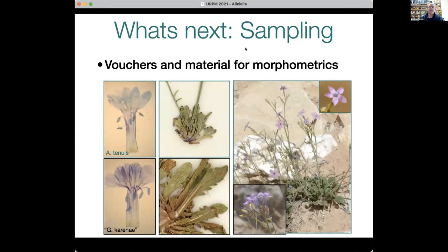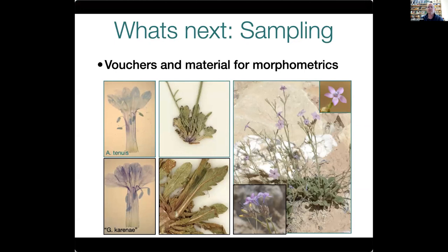One thing Teresa wasn't able to complete in her master's work was tying in morphometrics. We have morphological data from herbarium samples, but we need more. We have enough to know you can't really distinguish Gilia caronyi from Aliceella tenuous, but for the other haplotype groups more field data is needed. Unfortunately, there has been a drought since her thesis work began, making it difficult to obtain fresh flowers for morphological study over the last few years.